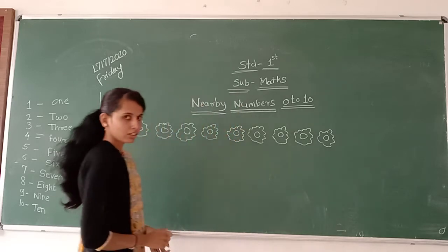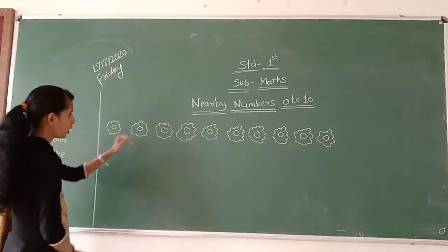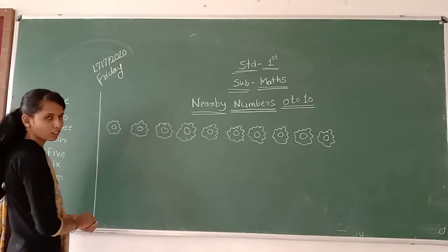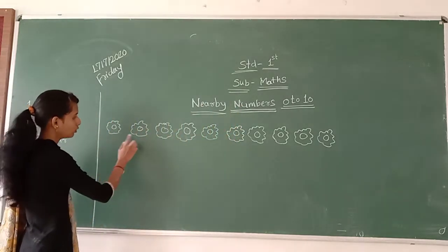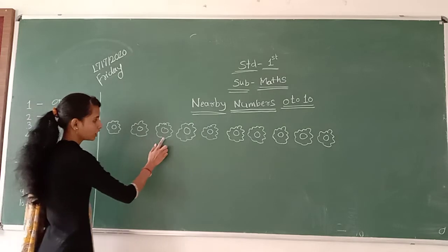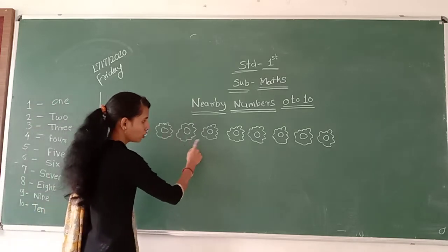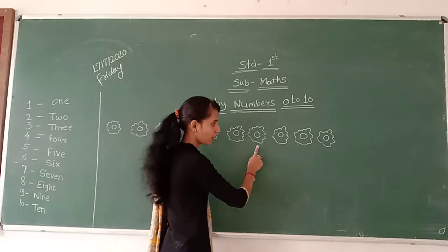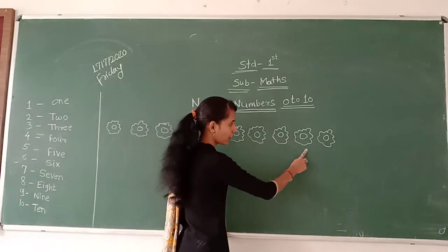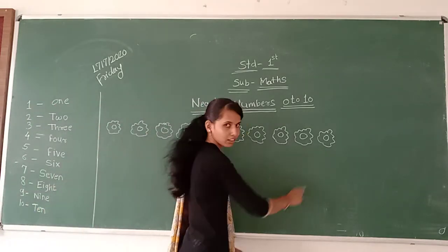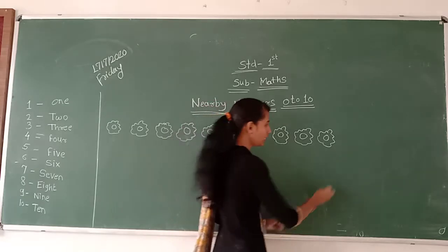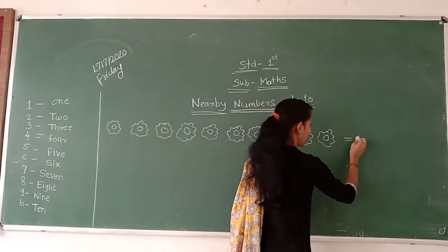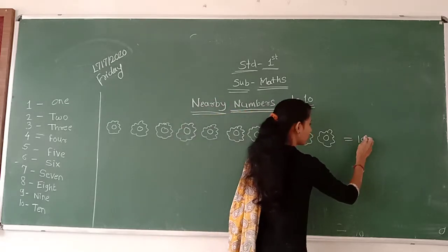See here, how many classes in this black button? 1, 2, 3, 4, 5, 6, 7, 8, 9, 10. Totally 10.